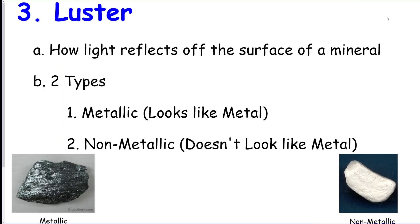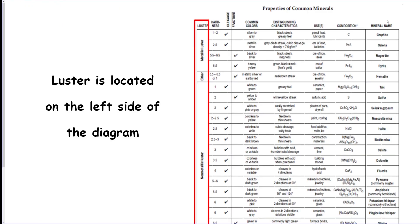The next test you could do is the luster test. This is how light reflects off the surface of the mineral. It could either be metallic or non-metallic — if it looks like a piece of metal, it's metallic; if it doesn't, it's non-metallic. That's located on the left side of the chart you can see here.